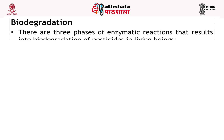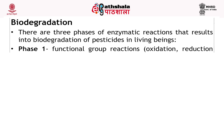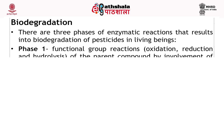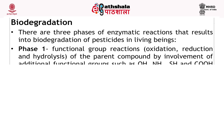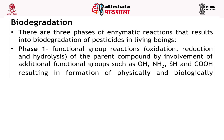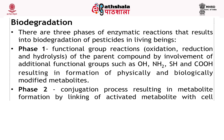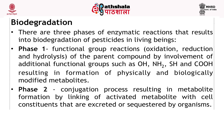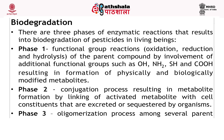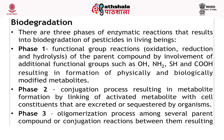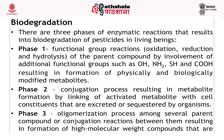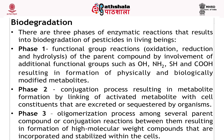Biodegradation. There are three phases of enzymatic reaction that result in biodegradation of pesticides in living organisms. Phase one: functional group reactions of the parent compounds by involvement of additional functional groups, resulting in the formation of physically and biologically modified metabolites. Phase two: conjugation processes resulting in metabolite formation by linking of activated metabolites with cell constituents that are excreted or sequestered by the organisms. Phase three: oligomerization process among several parent compounds or conjugation reactions between them, resulting in the formation of high molecular weight compounds that are incorporated and stabilized within the cell. The hydrophilic property of metabolites increases with decrease in mobility and toxicity as the various phases proceed, except in the case of insoluble polymers.